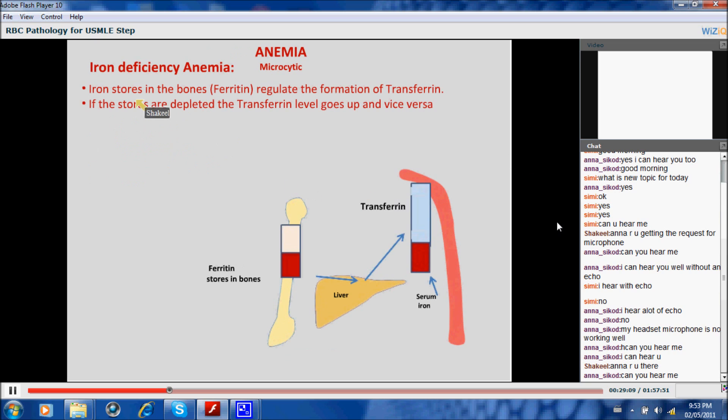So when we move along, we will see that the iron stores in the bone, ferritin, regulate the formation of transferrin. If the stores are depleted, the transferrin level goes up and vice versa. This is ferritin stores in the bone. It asks the liver to produce the transferrin, and the serum iron level then is according to that.